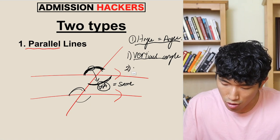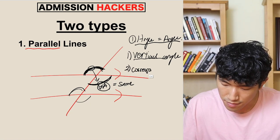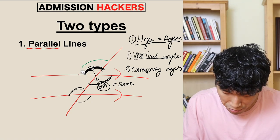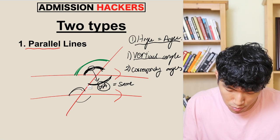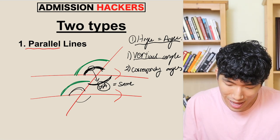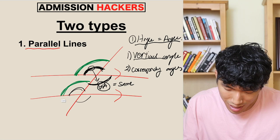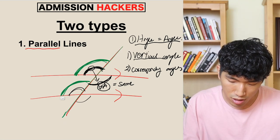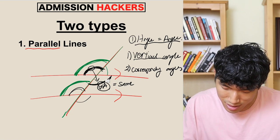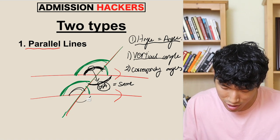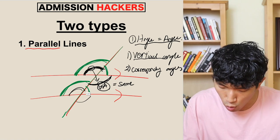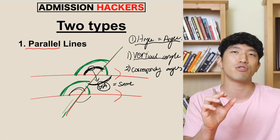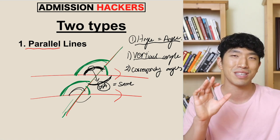The second thing you need to know is corresponding angles. Corresponding angles are angles that are literally on the same corner in terms of the transversal line. So these two angles are considered corresponding angles because they are on the same corner of the same line. Those are the two different types of angles you need to know within parallel lines. If you know those, you're going to be set.